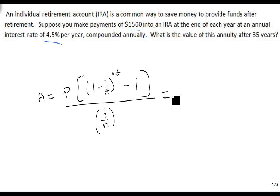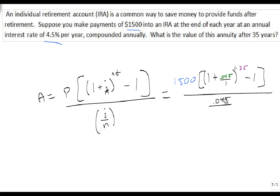Well, for this particular case, we're going to put 1,500 times 1 plus I is 0.045, or 4.5%, raised all over 1, raised to the 1 times 35 minus 1, divided by 0.045 over 1.